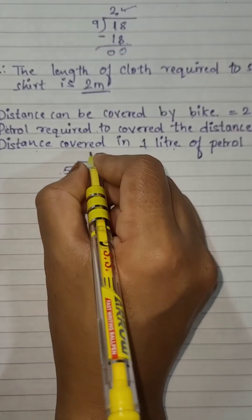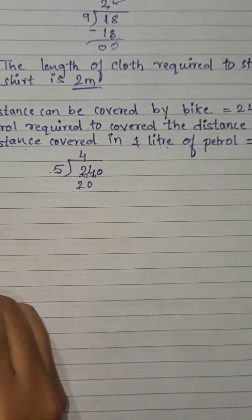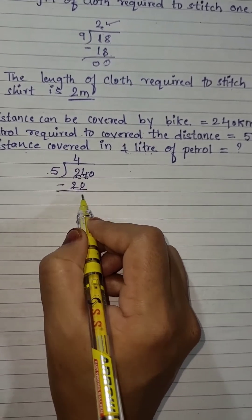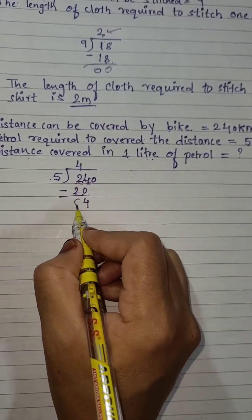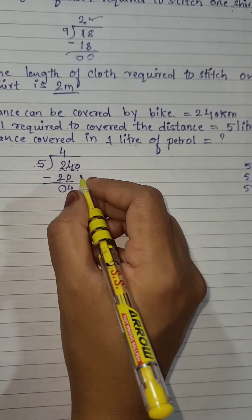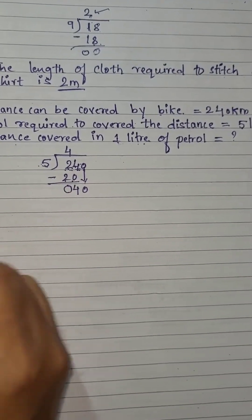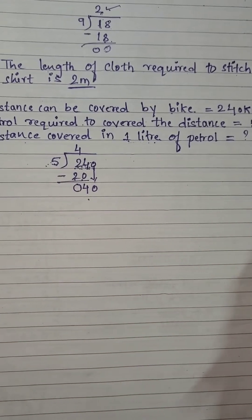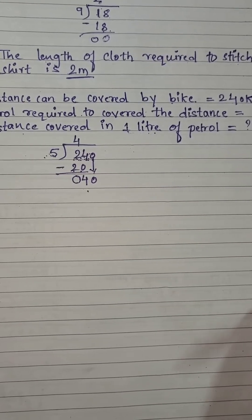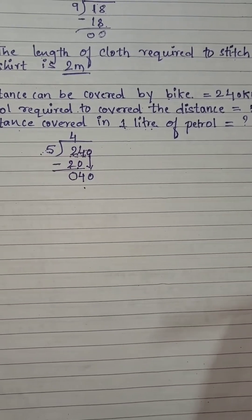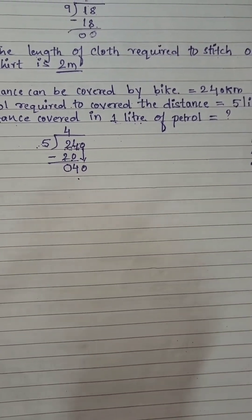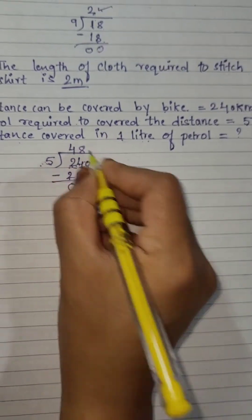Subtract: 4 minus 0 is 4, 2 minus 2 is 0. Bring down the next number — it becomes 40. Read the 5 table: 5×8=40. So 5 eights are 40.